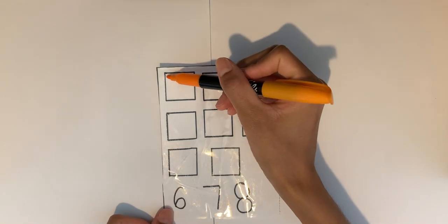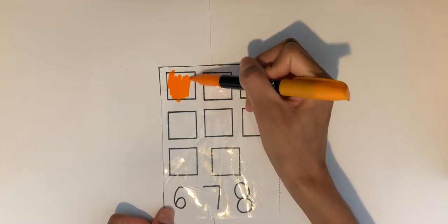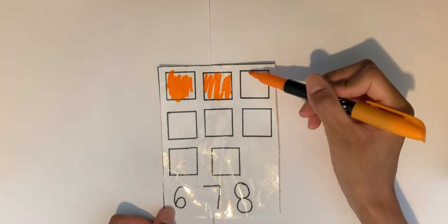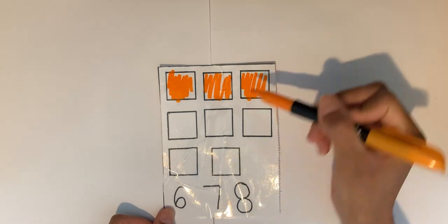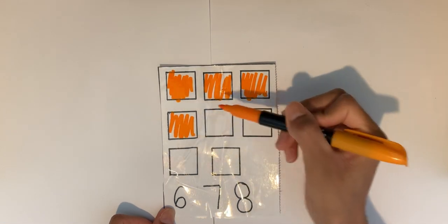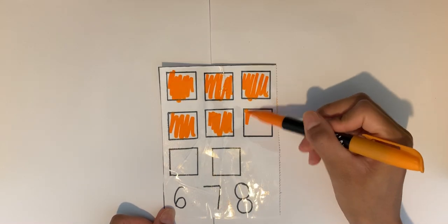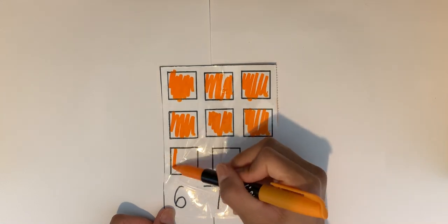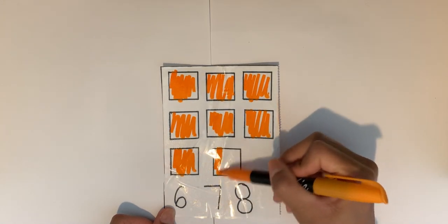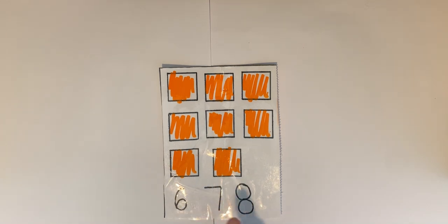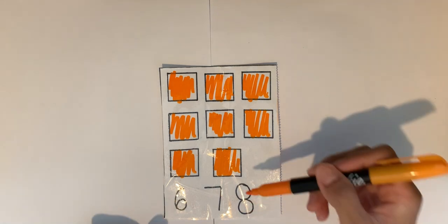Let's count again. One, two, three, four, five, six, seven, eight. Can you point at the right number? Six, seven, eight. What number? Eight.